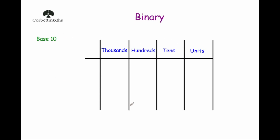Let's have a look at our base 10 number system. This is the number system which we're probably most familiar with. We have our units, tens, hundreds, thousands, tens of thousands, hundreds of thousands, millions, tens of millions, and so on. One of the great things about our base 10 number system is that we only need to know 10 different digits.